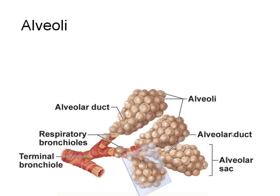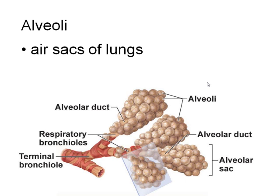The tiny air sacs of the lungs are the alveoli (singular: alveolus). The smallest bronchioles break down into respiratory bronchioles, each feeding an alveolar duct with alveoli attached. The alveoli have elastic fibers because they inflate and must have help deflating — like little balloons that inflate and then deflate. The alveoli are where gas exchange actually occurs.